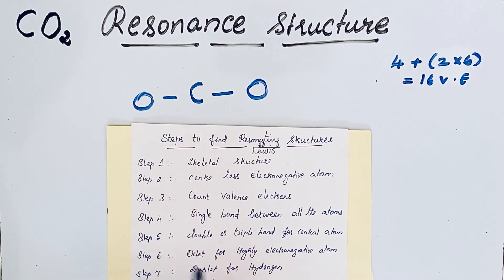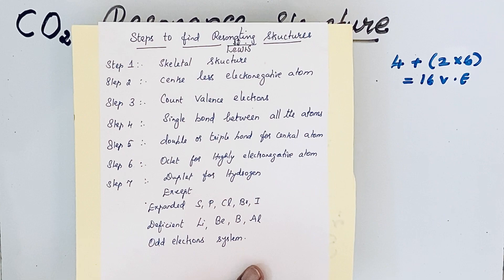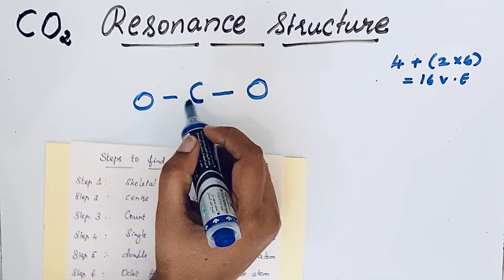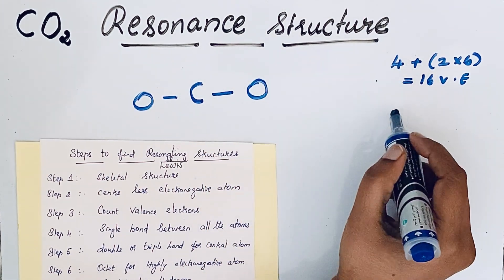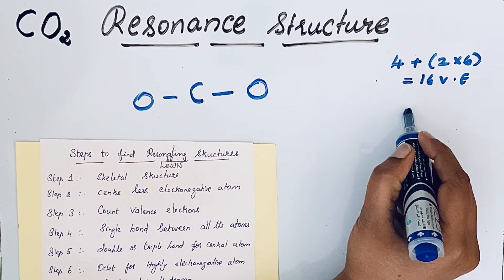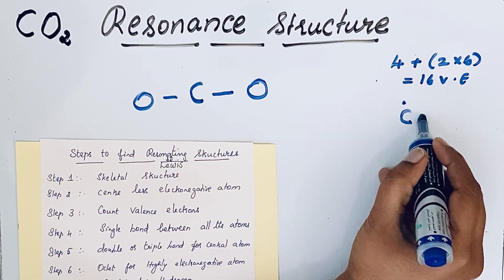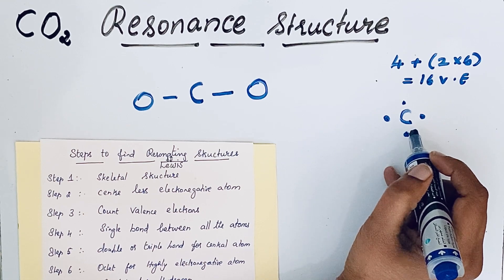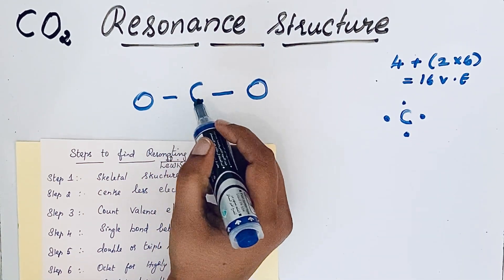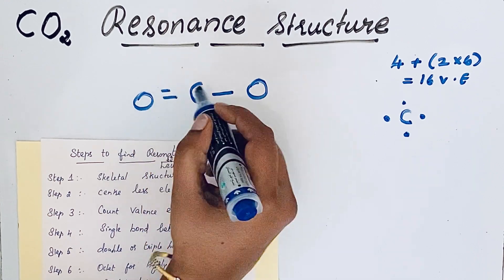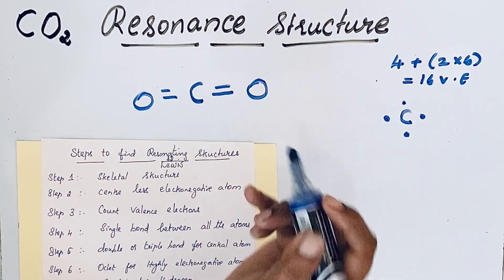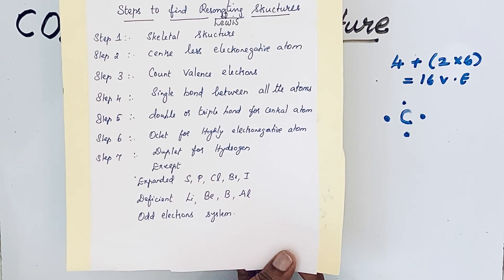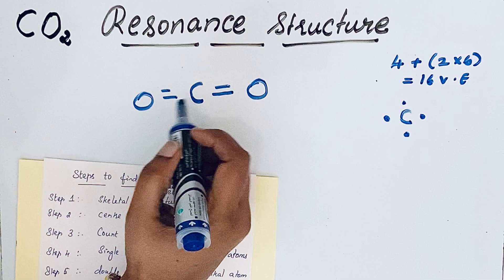Step five: form double or triple bonds for the central atom to satisfy the octet rule. Carbon has 4 valence electrons, meaning it can form four covalent bonds. We've already drawn two bonds, so we add one more bond to each side — forming double bonds with both oxygen atoms.